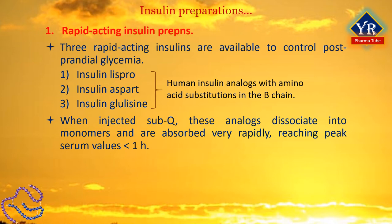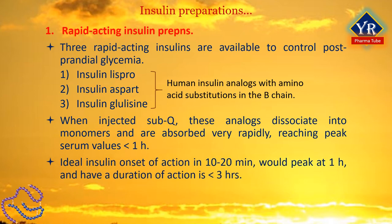The amino acid changes in these analogues do not interfere with their binding to the insulin receptor, with the circulating half-life, or with their immunogenicity, which are all identical to those of human regular insulin. An ideal insulin for pre-meal administration would have an onset of action in 10 to 20 minutes, would peak at 1 hour and would have a duration of action of less than 3 hours. Hence, the rapid acting insulin analogues are well suited for this purpose. Because the hypoglycemic effect of these insulins begins 10 to 20 minutes after subcutaneous injection, patients can easily coordinate insulin injections and meal times. These insulins are often used as part of a regimen that includes a long-acting insulin to provide basal insulin requirements.